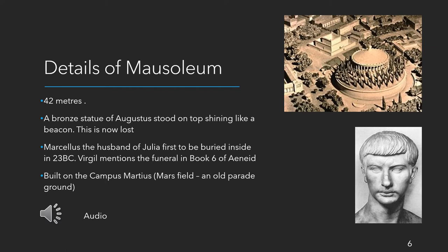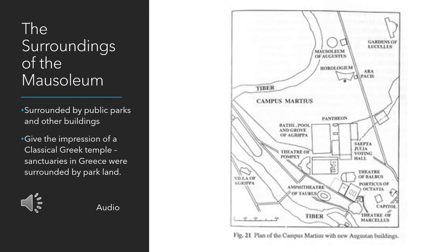There's a video coming up, but let's cover some brief details of the mausoleum first. The Mausoleum of Augustus is round and 42 metres high, and a bronze statue of Augustus stood on the top, shining like a beacon — that statue is now lost. Marcellus, the husband of Julia, was the first to be buried inside in 23 BC, and Virgil mentions the funeral in Book 6 of the Aeneid. It was built on the Campus Marcius — Mars Field — the old parade ground, so its very existence symbolised Augustus bringing peace to Rome.